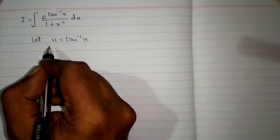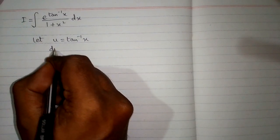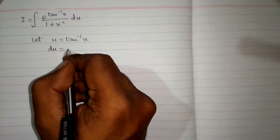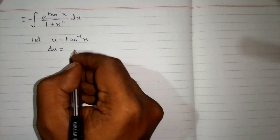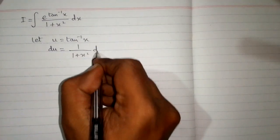We will substitute u in place of tan inverse x. The differential du equals the derivative of tan inverse x, which is 1 upon 1 plus x square multiplied by dx.